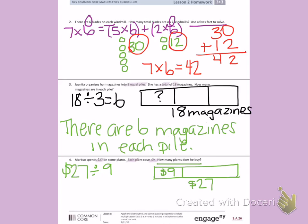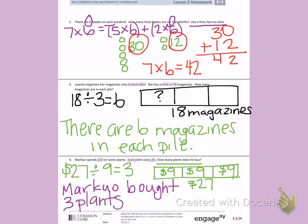Now I'm going to count by threes nine times to see if I can get to twenty-seven: three, six, nine, twelve, fifteen, eighteen, twenty-one, twenty-four, twenty-seven. That's nine times, and I got to twenty-seven. So Marco bought three plants. That's twenty-seven dollars divided by nine equals three. Marco bought three plants.